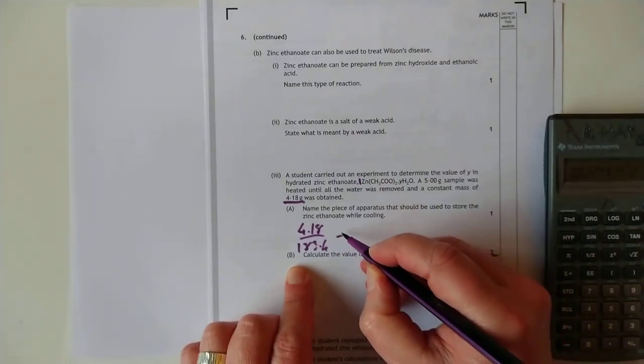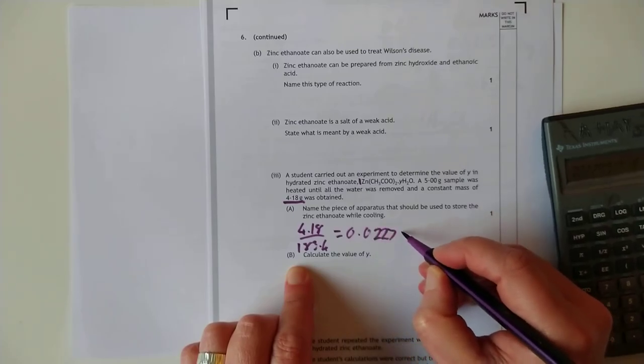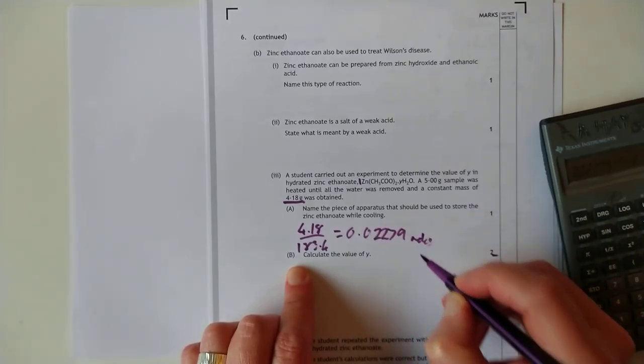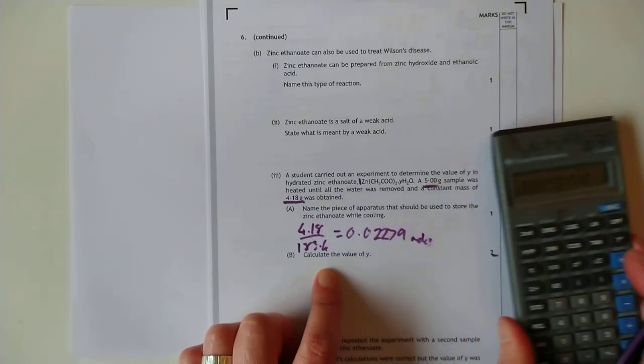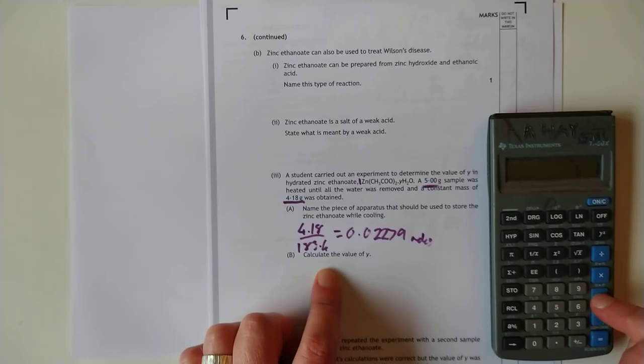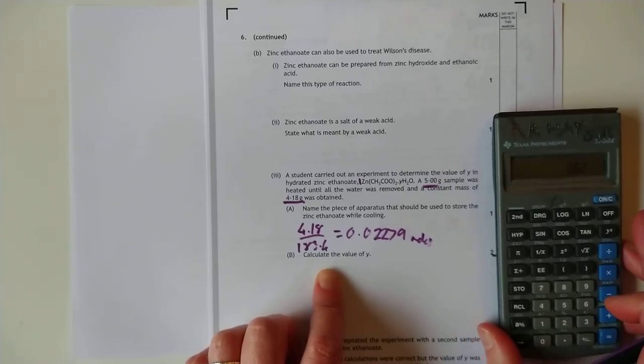gives us moles of zinc ethanoate, the pure stuff, of 0.02279 moles. Then I work out the moles of water, which, of course, is just the difference between these two. So that's 5 take away 4.18. Should have done that in my head. That's shocking.